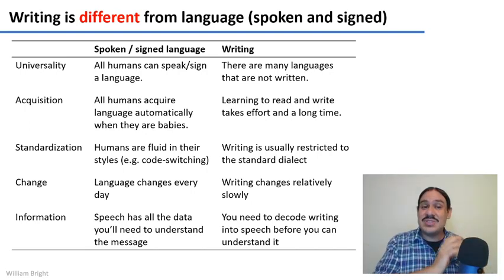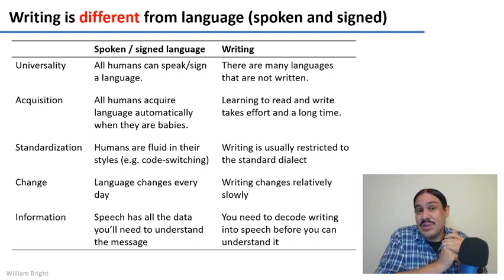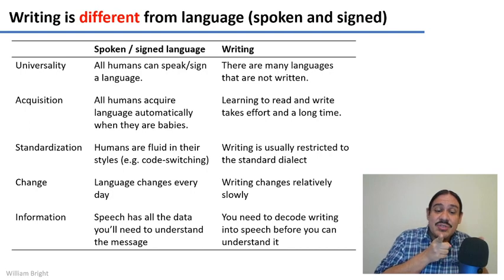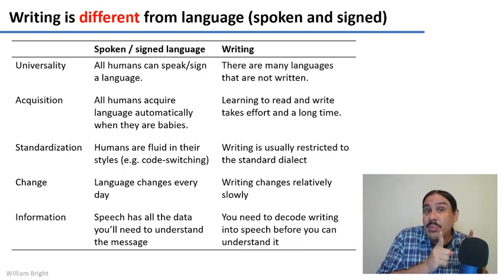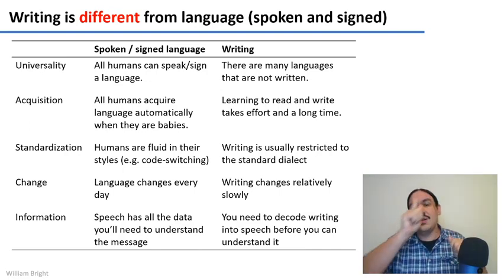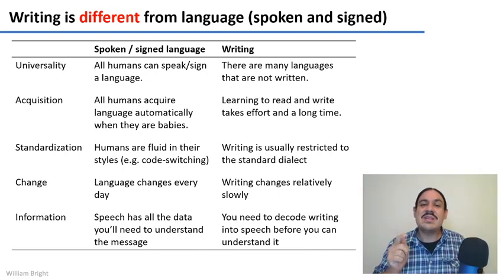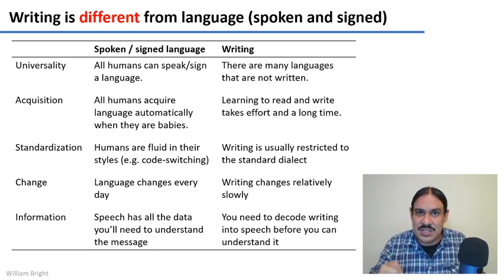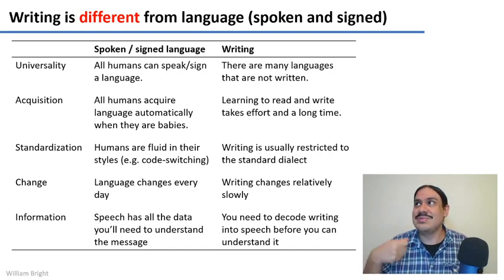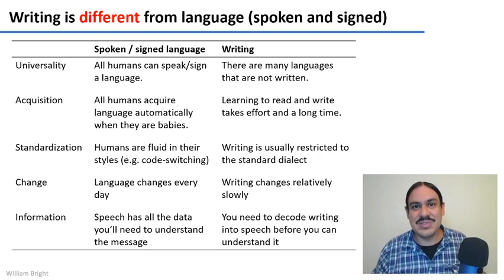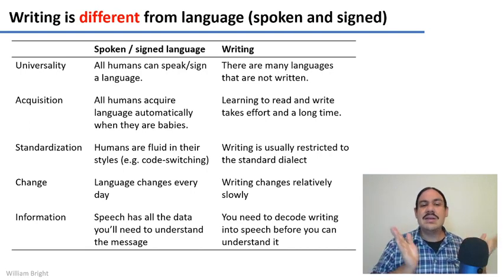Regarding acquisition, all humans acquire language when they're babies. If they're learning it during their critical period between zero and three years old, they will learn a human language — they can't help it, it's like an instinct. Writing, on the other hand, is something that requires a lot of effort; it takes years of schooling, and even after years of practice you still make spelling mistakes from time to time.